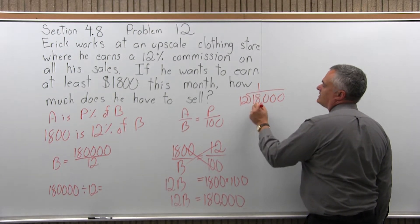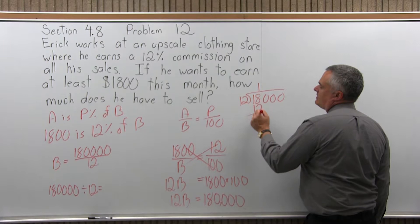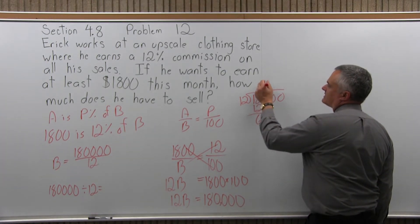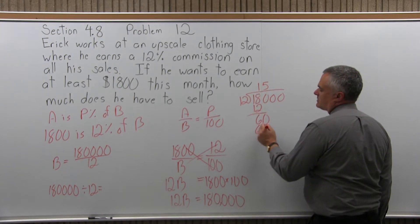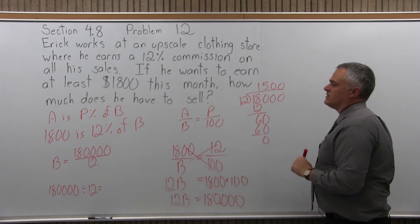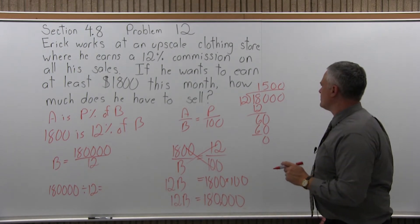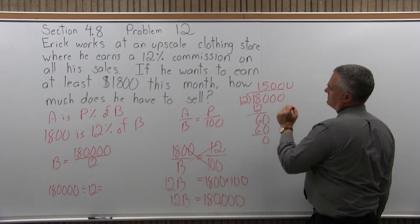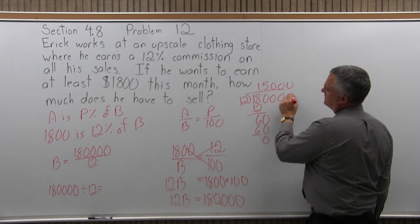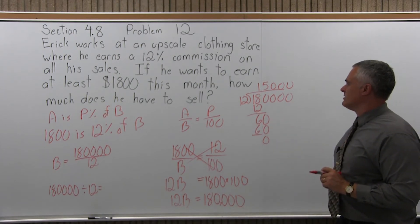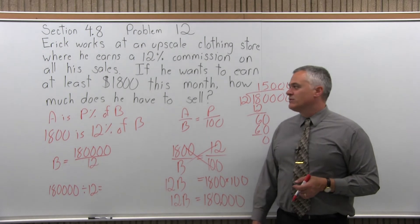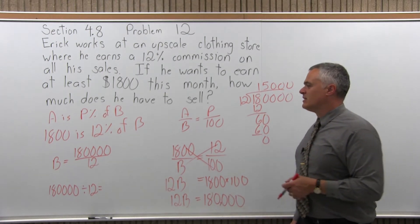12 goes into 18 once. 18 minus 12 is 6. Bring down the next 0. 12 goes into 60 five times. 5 times 12 is 60, remainder 0. The remaining zeros give you zeros, so the result is 15,000. If he sells $15,000 worth of clothing, he'll earn his $1,800 commission.